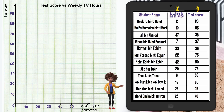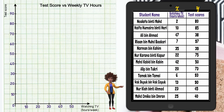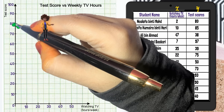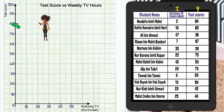Remember, in correlations we are always dealing with paired scores, so the values of the two variables taken together will be used to make the diagram. Decide which variable goes on each axis, and then simply put a cross at the point where the two values coincide.